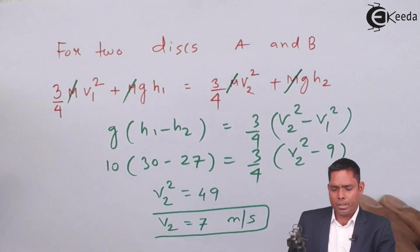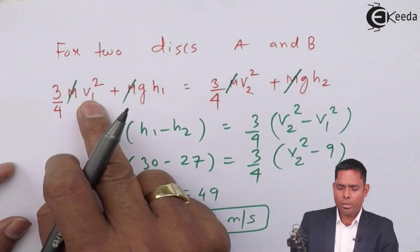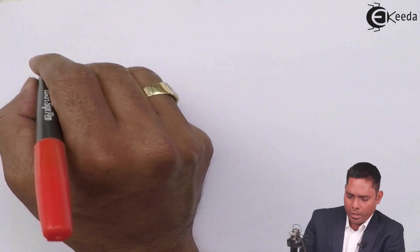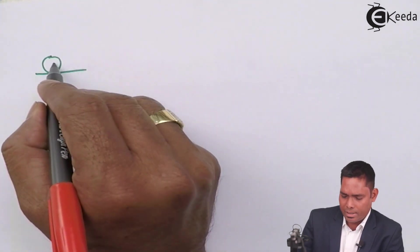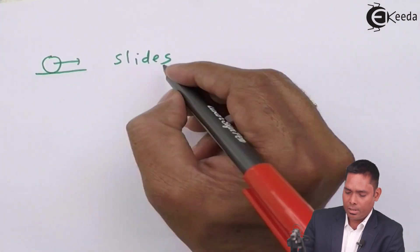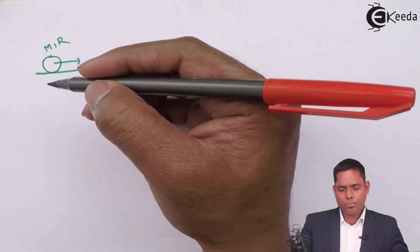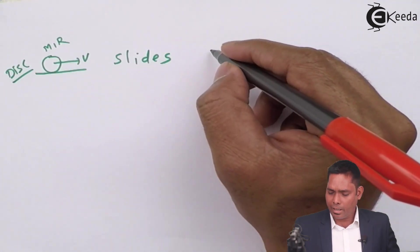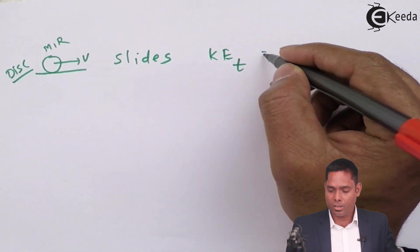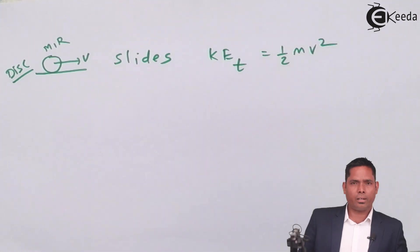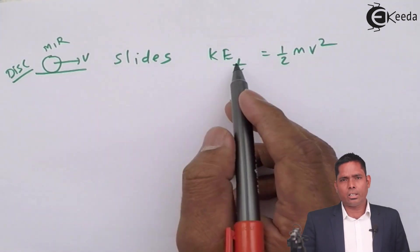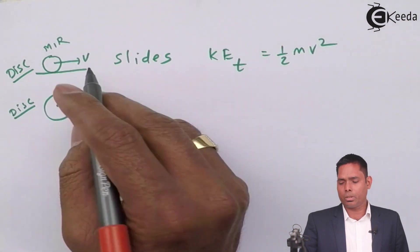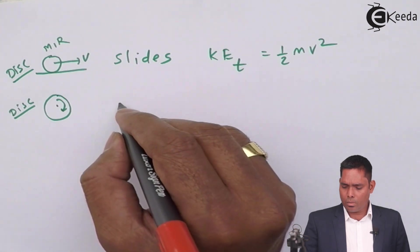Some of you might be thinking how I got this 3/4 M V squared. It's not half M V squared, so let me tell you about that. When a body slides, in case of slide, mass is M and radius is R. If it slides with velocity V, then suppose there is a disc under consideration. The kinetic energy of translation is half of M V squared. This is case of translational motion. When case of only rotational motion of a disc, only rotation, pure rotation, the kinetic energy of rotation is half of I omega squared.